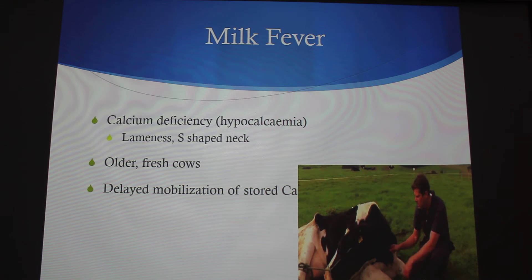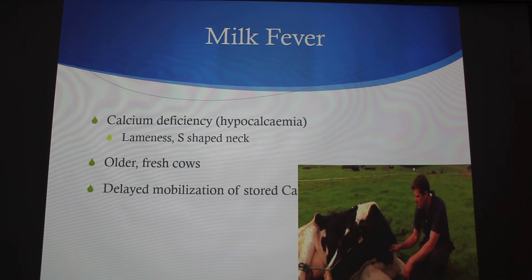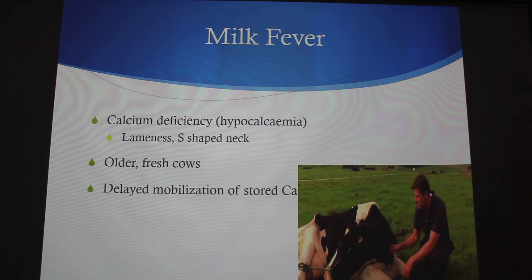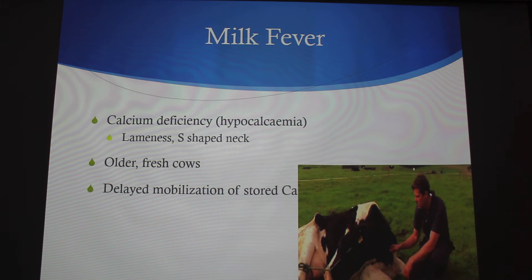For milk fever, this S-shape in the neck is the biggest indicator. It's essentially a calcium deficiency in the cow. What you want to do is actually lower the calcium levels in the feed before calving so they can rely on calcium storage in their bones — shifting metabolism from depositing calcium into bone to mobilizing it. It's more common in older and fresh cows.